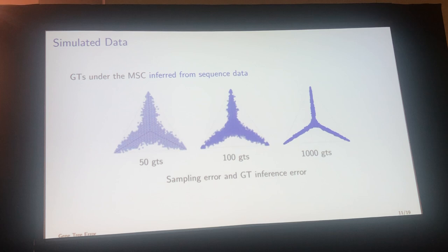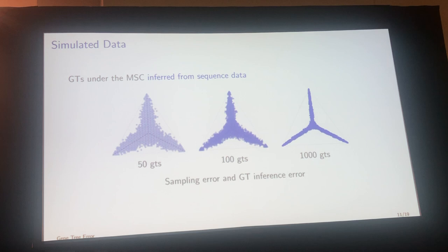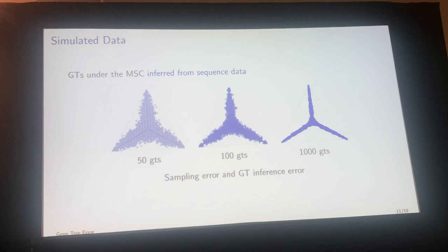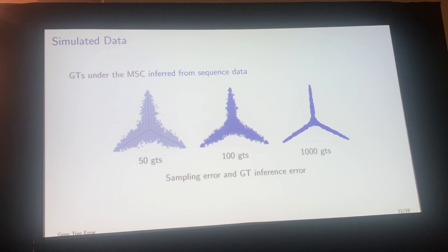They also simulated sequences along those gene trees and then inferred the gene trees back. Comparing the perfect gene trees to the inferred gene trees, what you see is just a little bit more spread in the cloud. This is all simulated, so there are no substantial problems, but it's still a useful thing to think about.